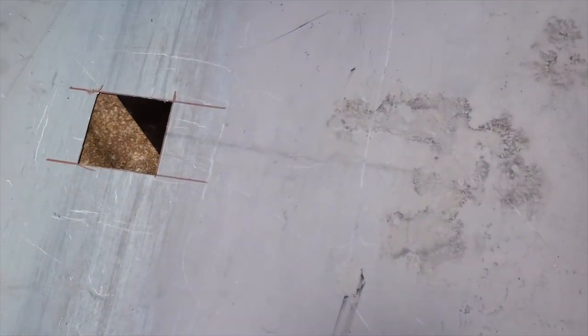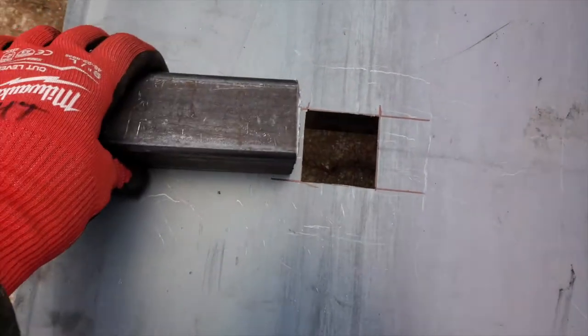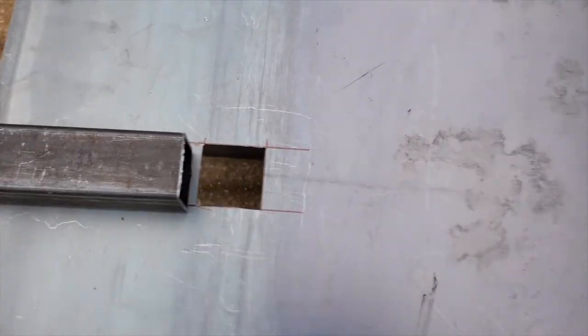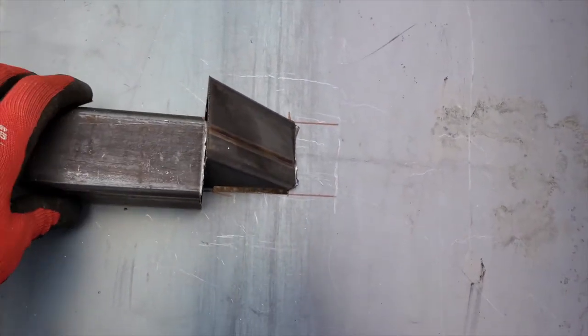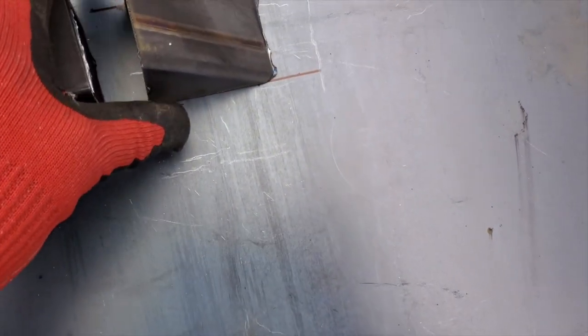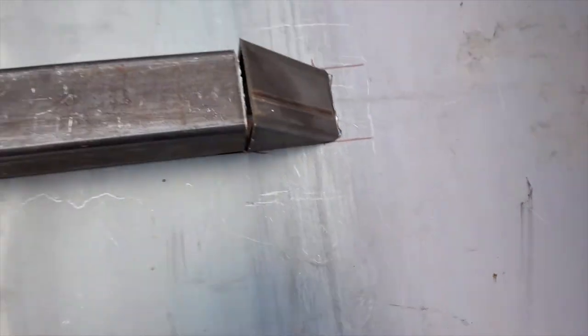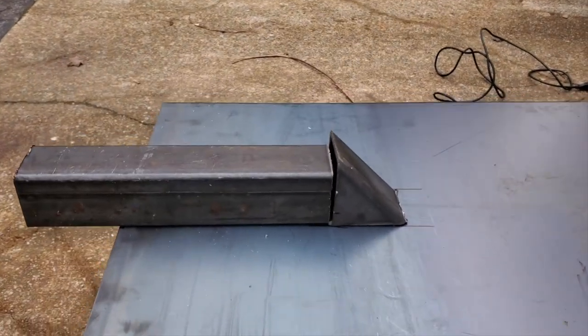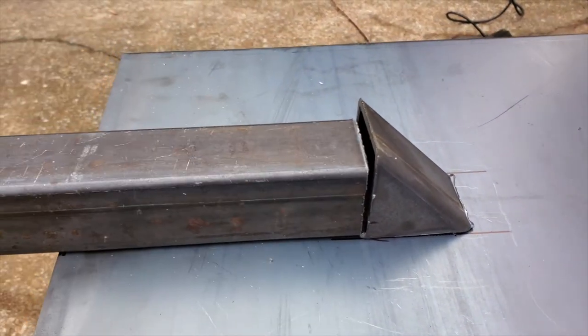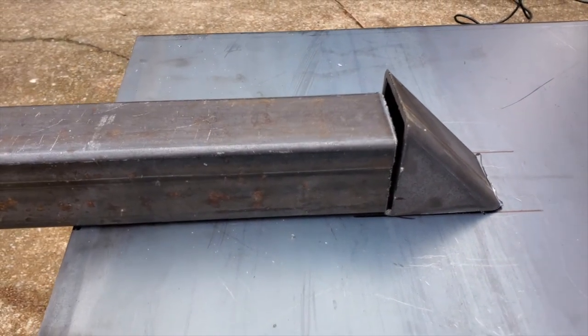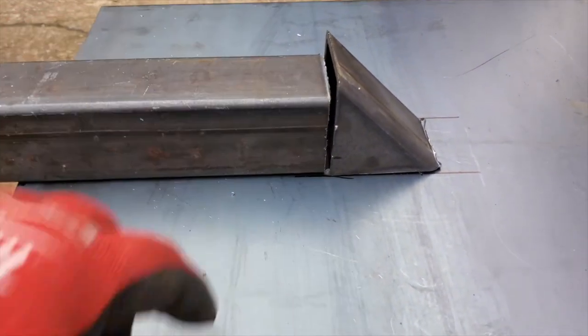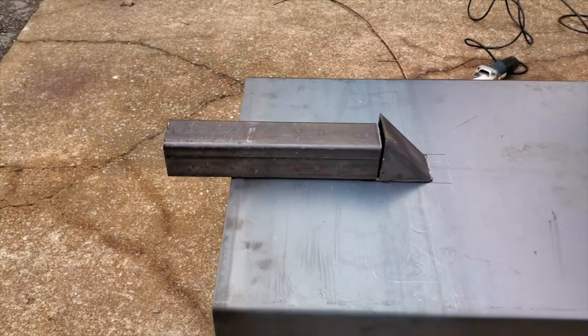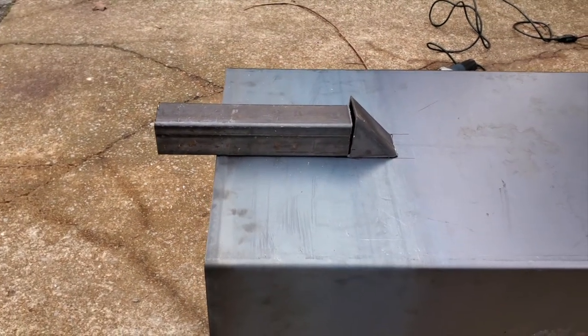All right, I have the hole cut out and this is kind of what the setup is gonna look like. Something like that. This piece here, I'll trim down to fit. I have to take about half an inch off of it to make it match up right here. And then that's what the smokestack will look like.